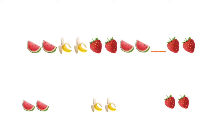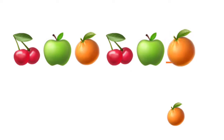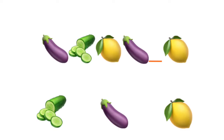Now let's see if we can guess which fruit is missing in this pattern. You're right, the bananas. Now which fruit is missing in the last space? Yes, you're right, the orange. Last one — which one is missing in this pattern? Yes, the cucumber.